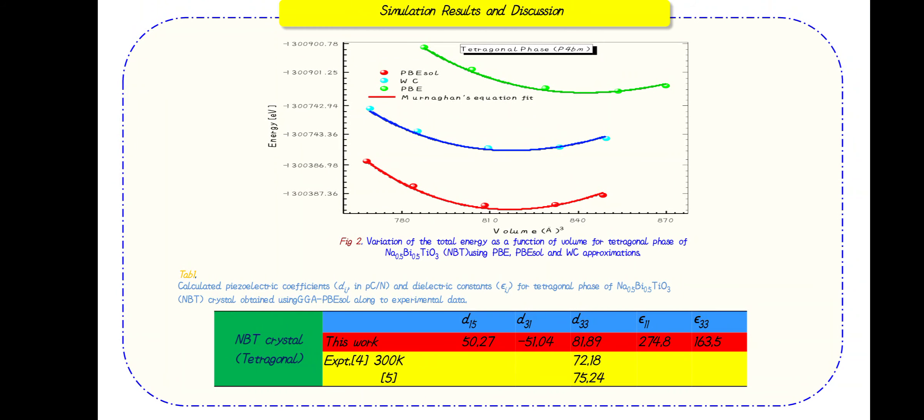The lattice constants obtained are a=3.9Å and c=5.3Å with PBEsol, and a=3.9Å and c=5.3Å with WC, in agreement with the measured values of a=3.9Å and c=5.5Å obtained by Jonalhal.